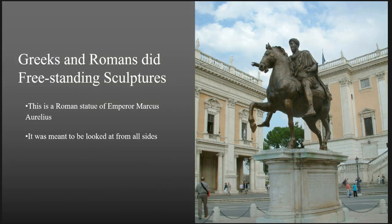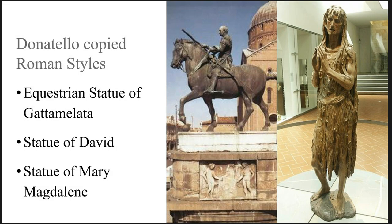Greeks and Romans did freestanding sculptures. Here's a Roman statue of Emperor Marcus Aurelius — if the name sounds familiar, if you ever watched the movie Gladiator, that's the old man emperor at the beginning who ends up being killed by his son. This particular statue is supposed to be looked at from all sides. We have Donatello, who copies some Roman styles. He created an equestrian statue of Gattamelata, a statue of David, and a statue of Mary Magdalene.